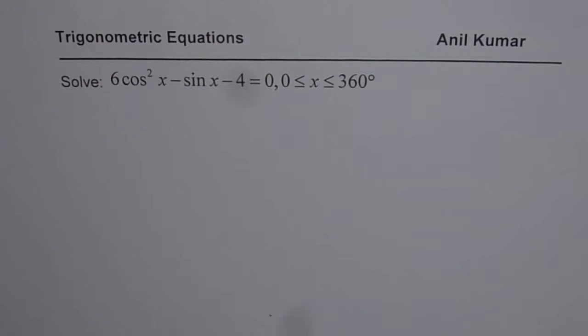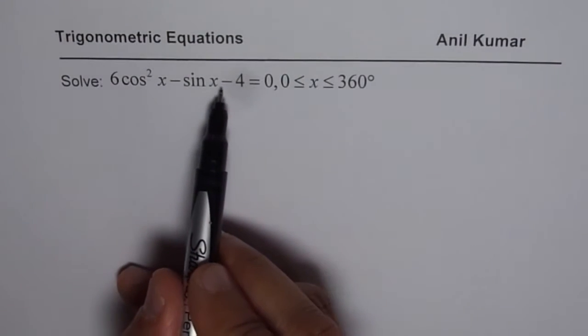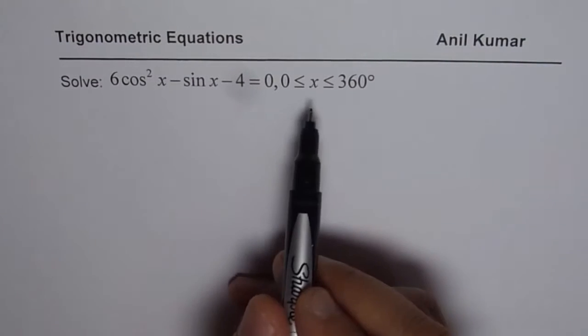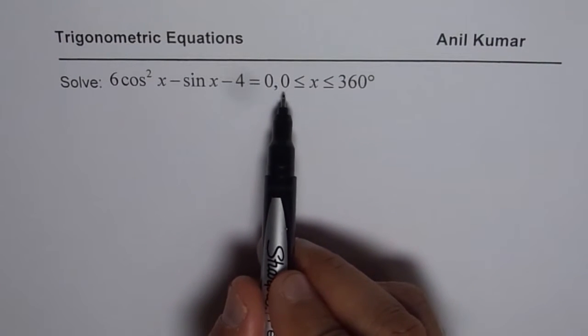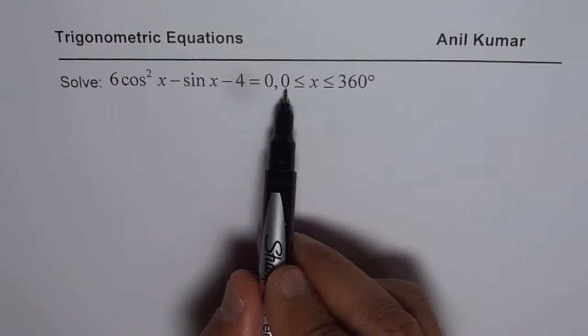I am Anil Kumar and now we will discuss solution of trigonometric equation in quadratic form. Here we have an equation which is 6 cosine square x minus sin x minus 4 equals to 0, where x is less than 360 degrees and greater than or equal to 0 degrees.